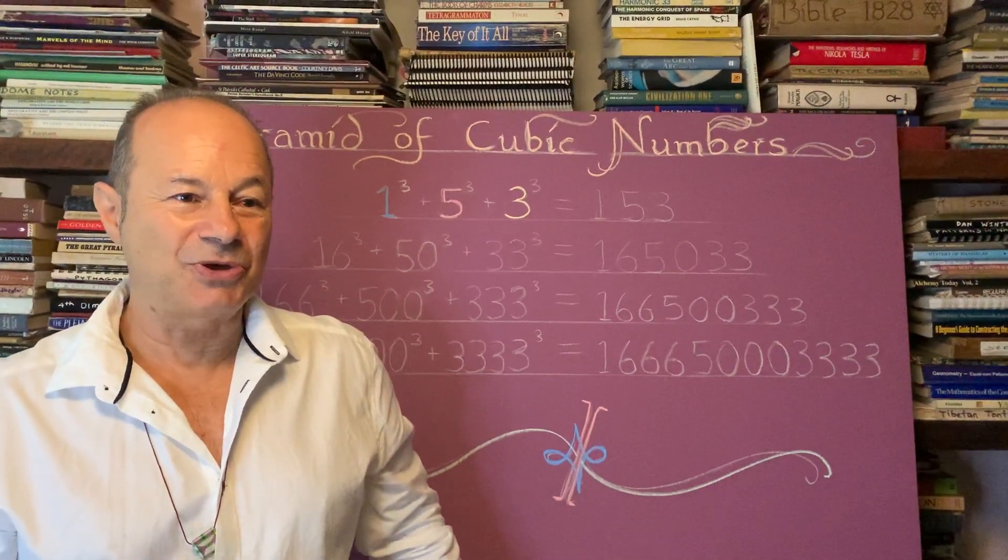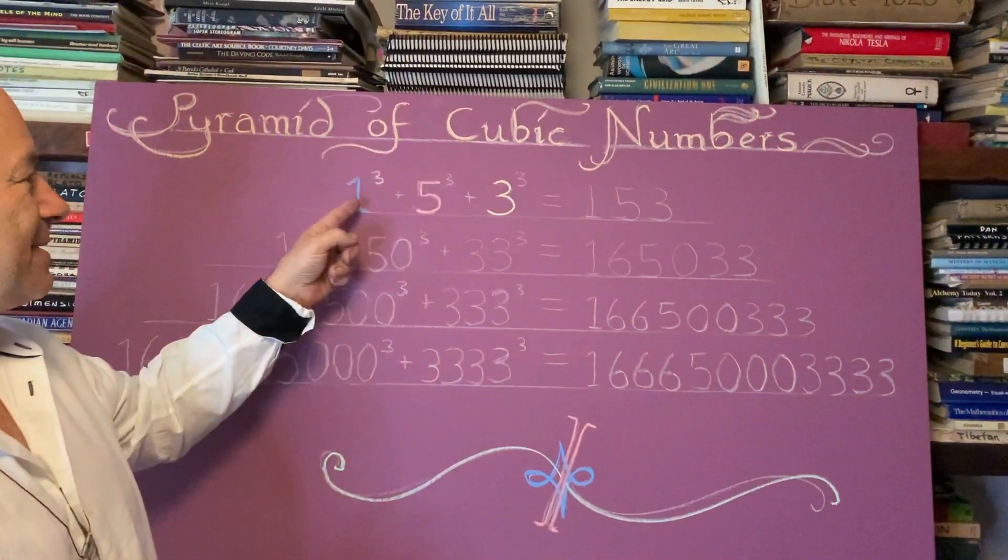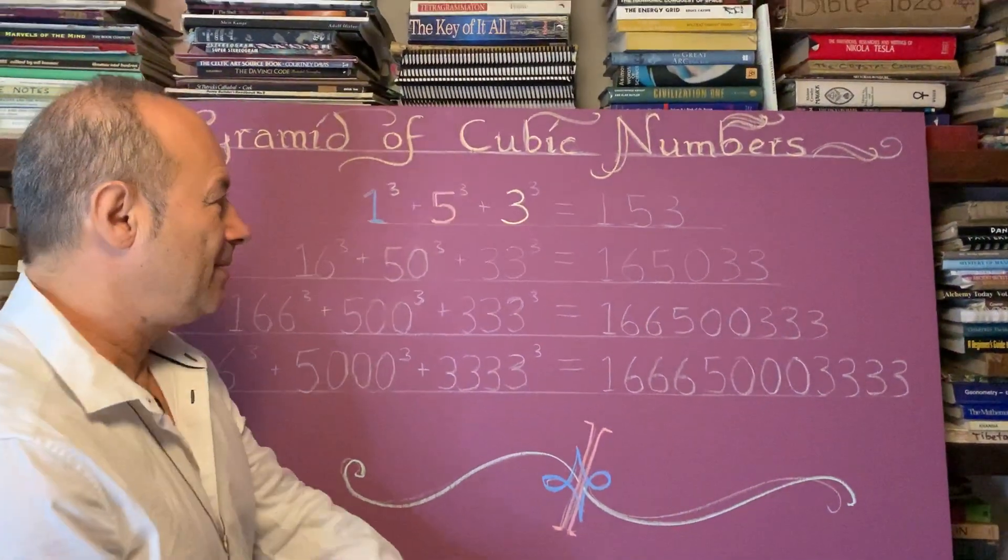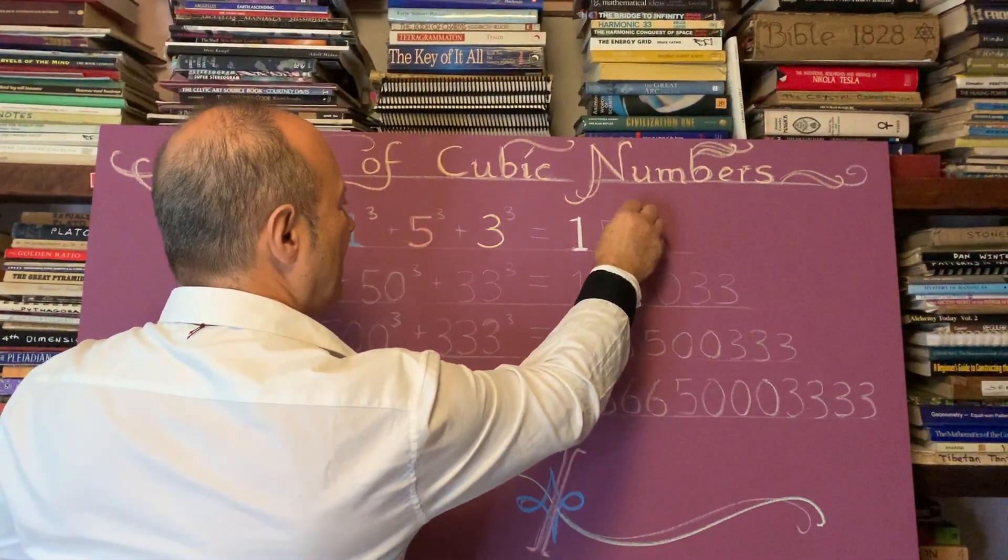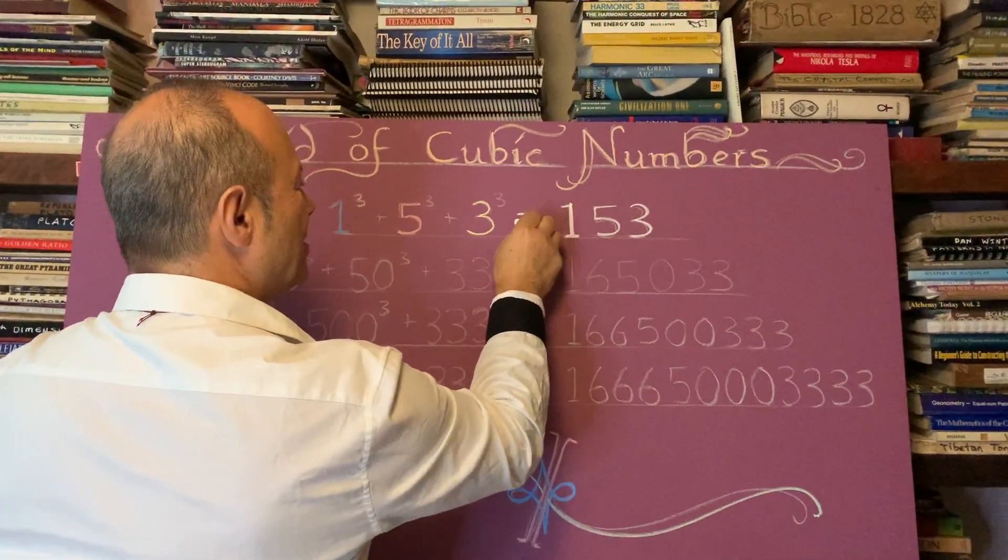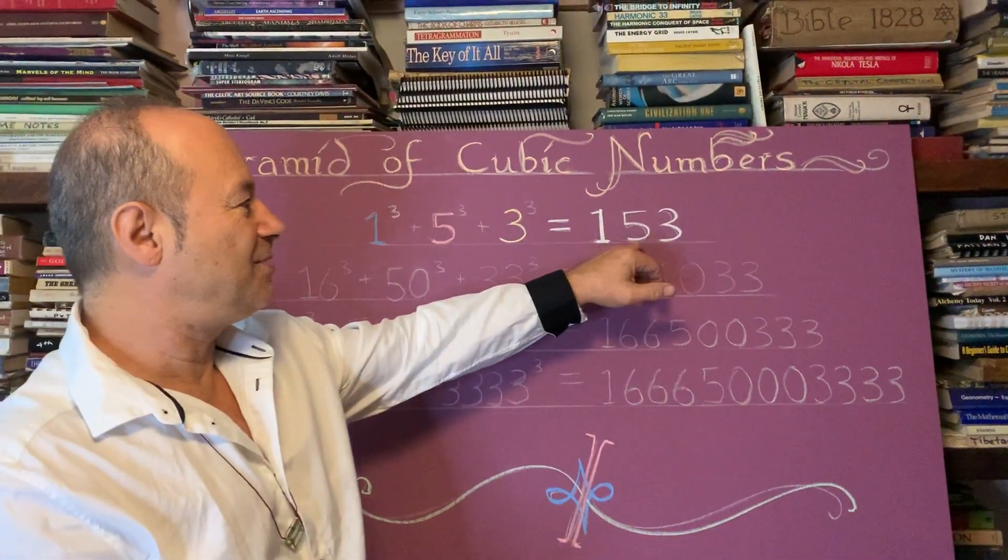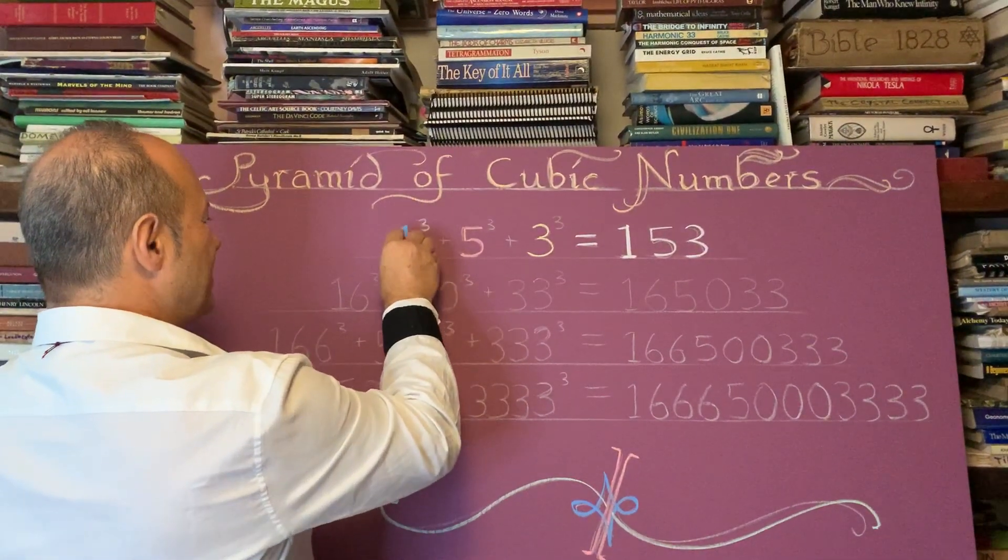So I just want you to watch how as I cube all the numbers, it's a cubic number pyramid. So I'm going to take the number 153, and I'm going to show you that when we take the individual digits of 153, we're going to cube every digit.